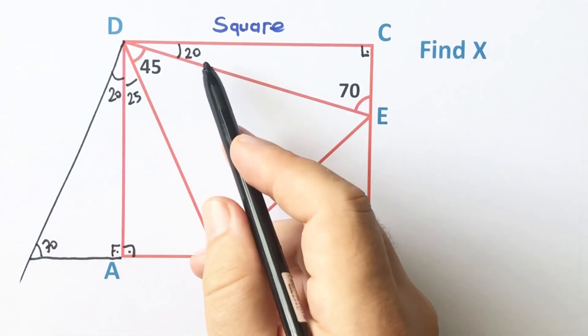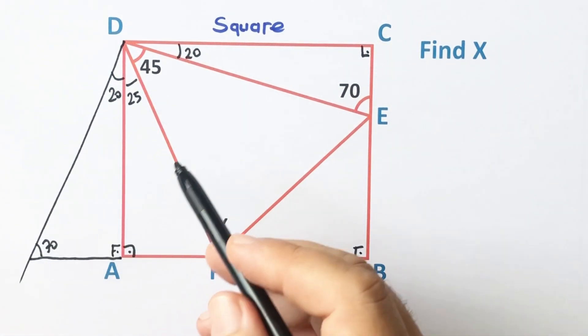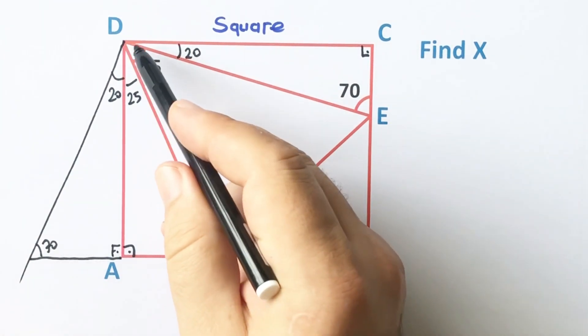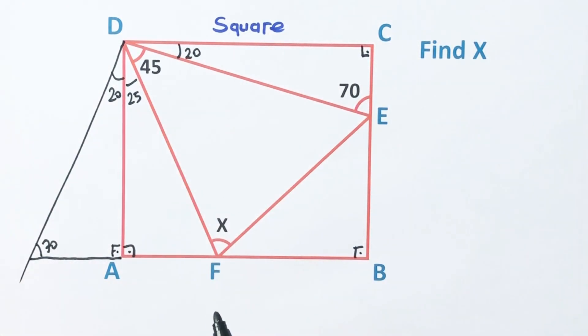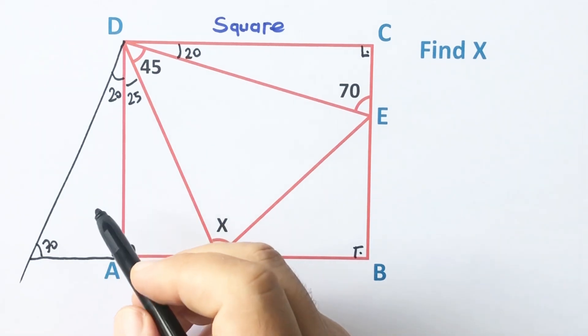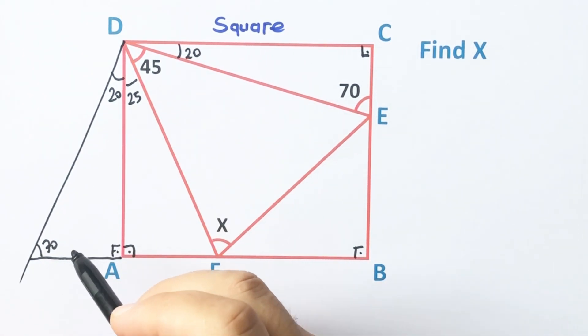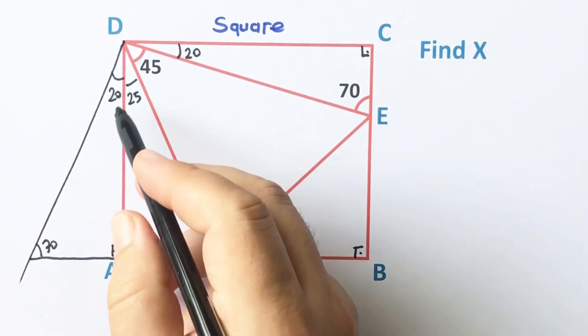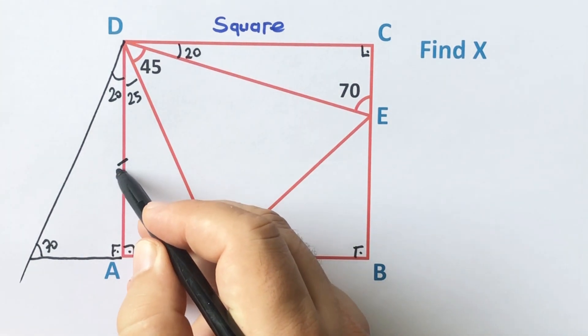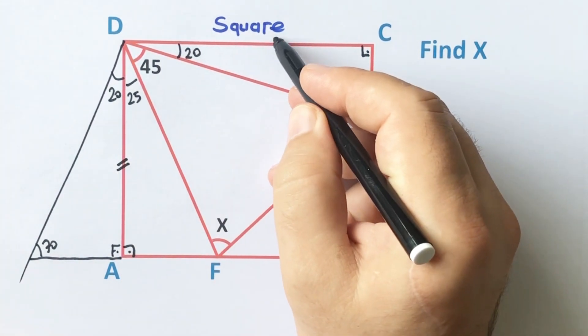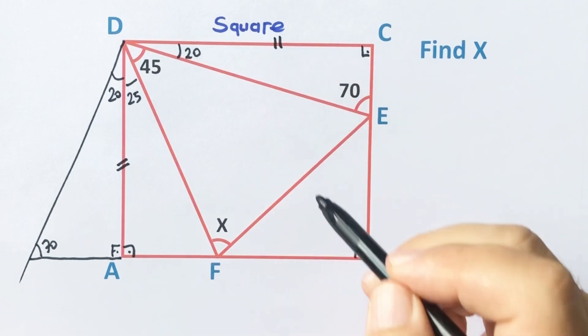Therefore if you notice that these two triangles are congruent, because the opposite of the 70 degrees in both triangles is the same side. The opposite of the 70 degrees are equal.